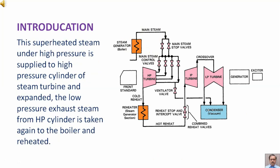This superheated steam under high pressure is supplied to high pressure cylinder of steam turbine and expanded. The low pressure exhaust steam from high pressure cylinder is taken again to the boiler and reheated.